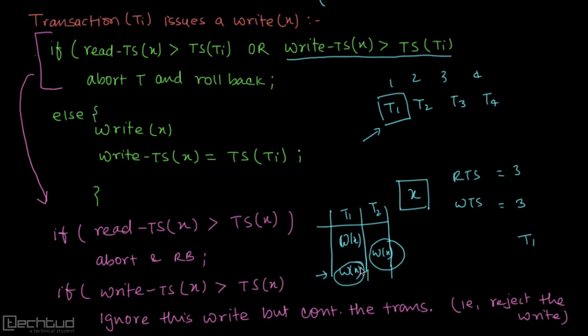So this was all about Thomas Write Rule, and in the next lecture we will understand another concurrency control protocol which is validation-based protocol. So I hope you understand so far. If you have any doubt, please go to tech2.com and ask your doubt. See you in the next lecture.